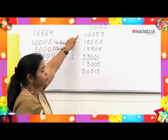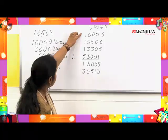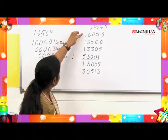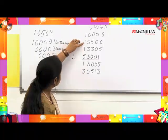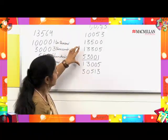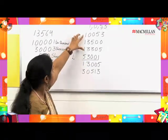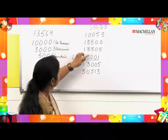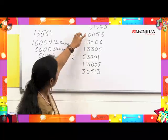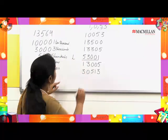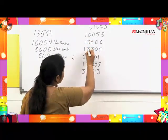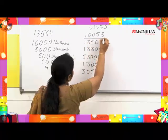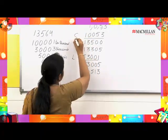Now, which is the smallest number? If I compare from the 10,000 position, I see that several numbers all have 1 there, so I cannot compare them. I go to the next position — the 1,000 position. In the 1,000 position, it is very clear that one number has 0 while the rest have 3, so that number with 0 becomes the smallest.